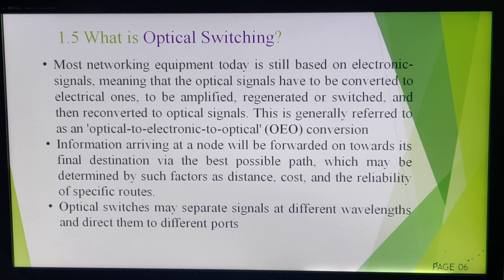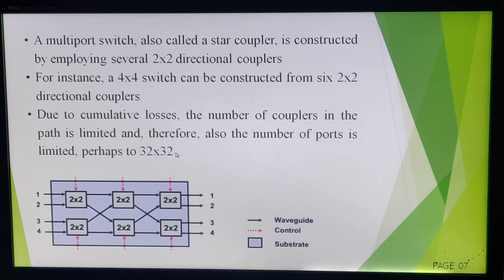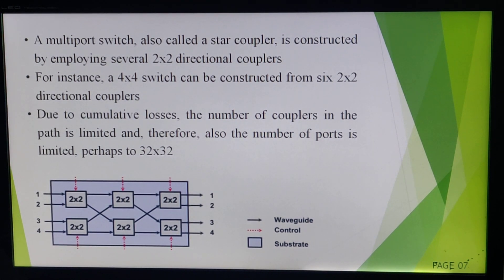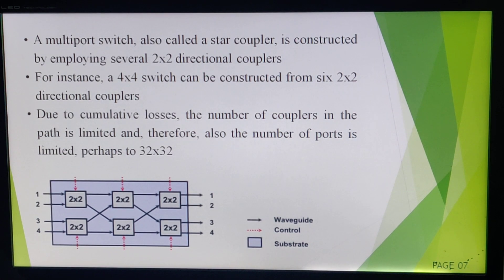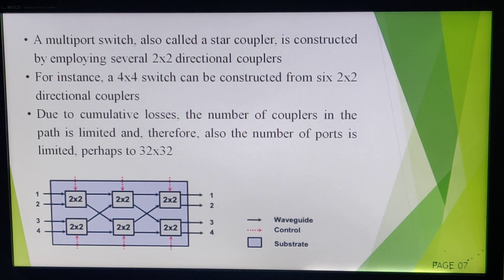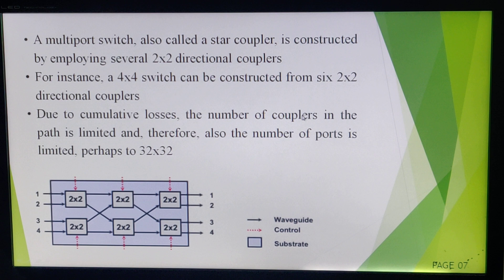Optical switching depends on optical to electronic to optical (OEO) conversion. A multiport switch is also known as a star coupler. A coupler is a device which couples two signals through optical fiber. The multiport switch is constructed using two-by-two directional couplers. In this network, six two-by-two directional couplers are used, forming a four-input and four-output port switch. Input-output switching is done using these two-by-two directional couplers.